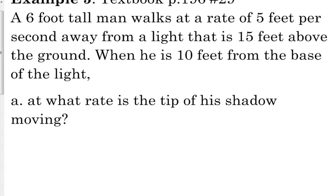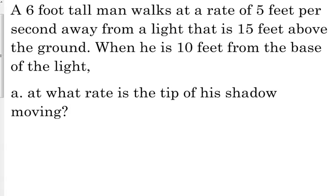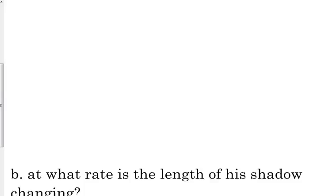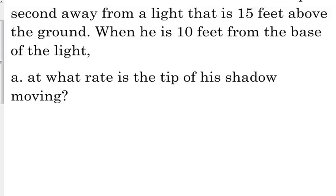A 6 foot tall man walks at a rate of 5 feet per second away from a light that is 15 feet above the ground. When he is 10 feet from the base of the light, we're going to answer two questions. At what rate is the tip of his shadow moving and at what rate is the length of his shadow changing.